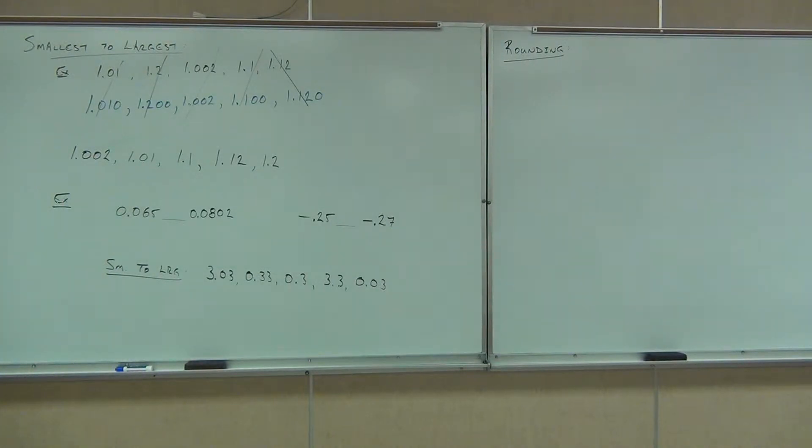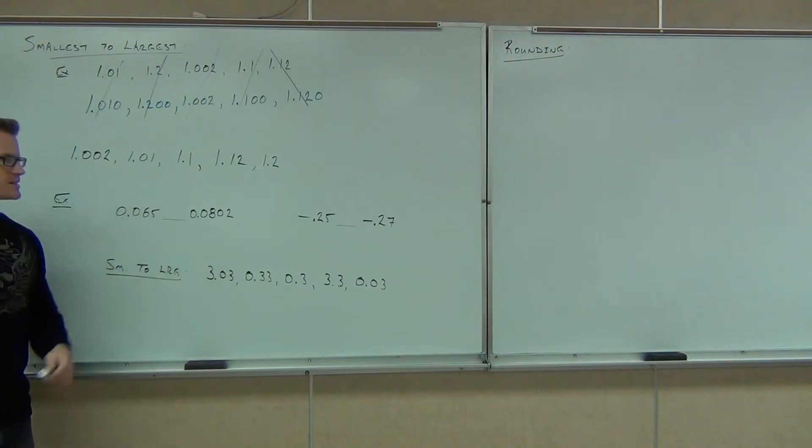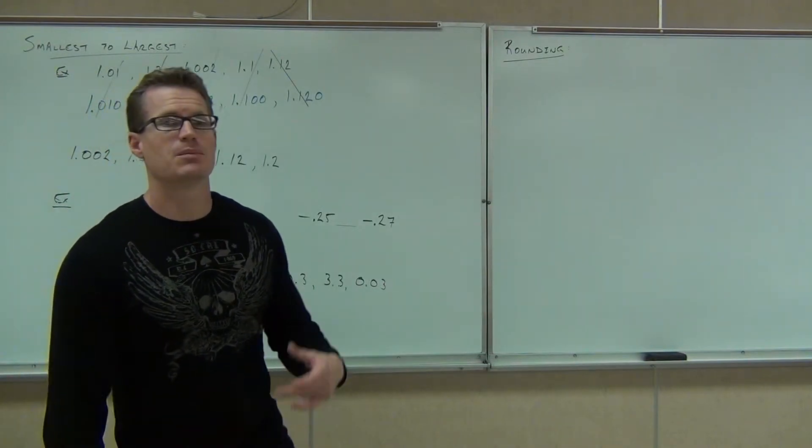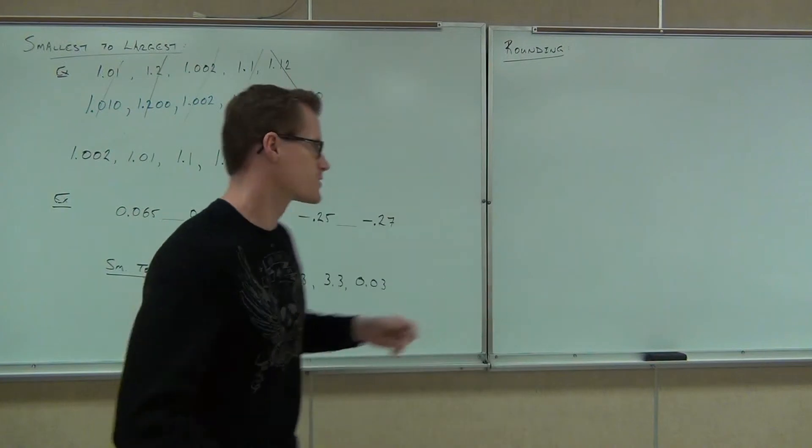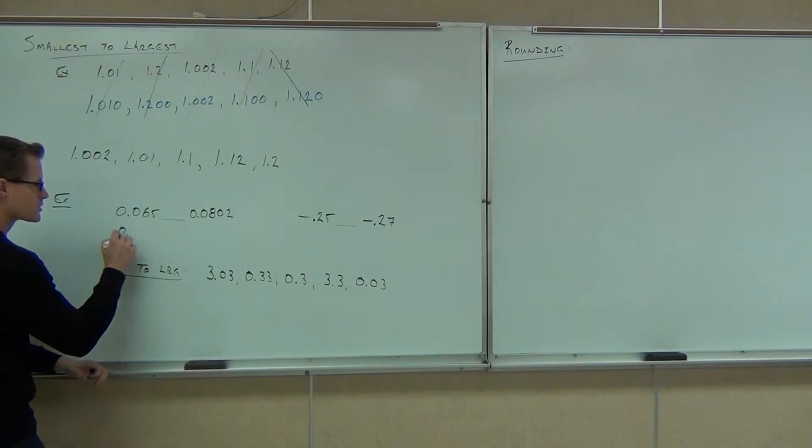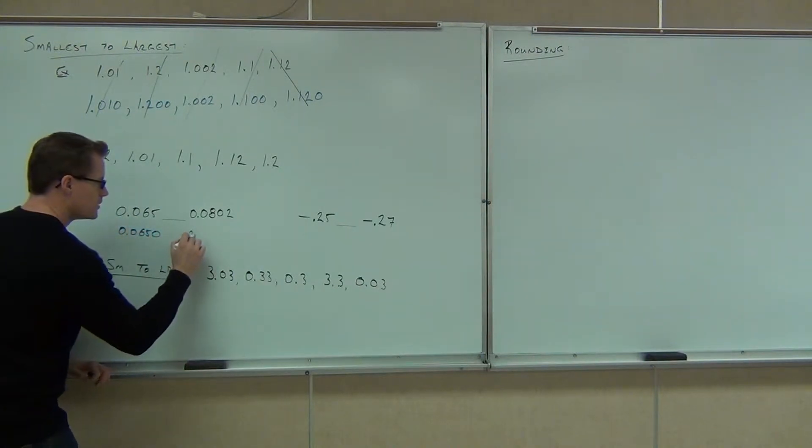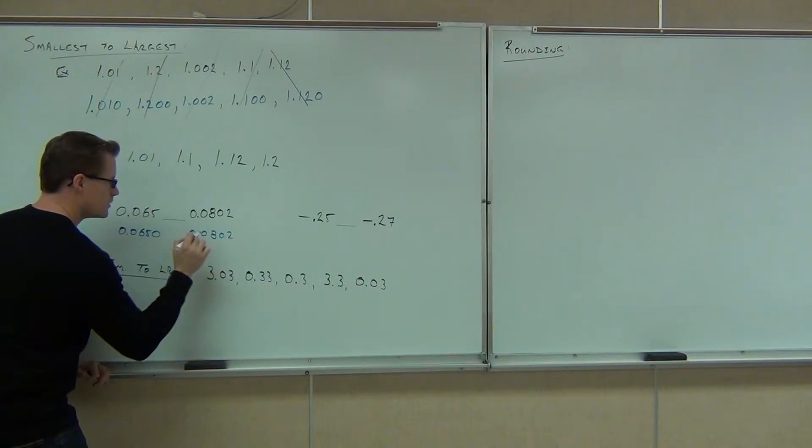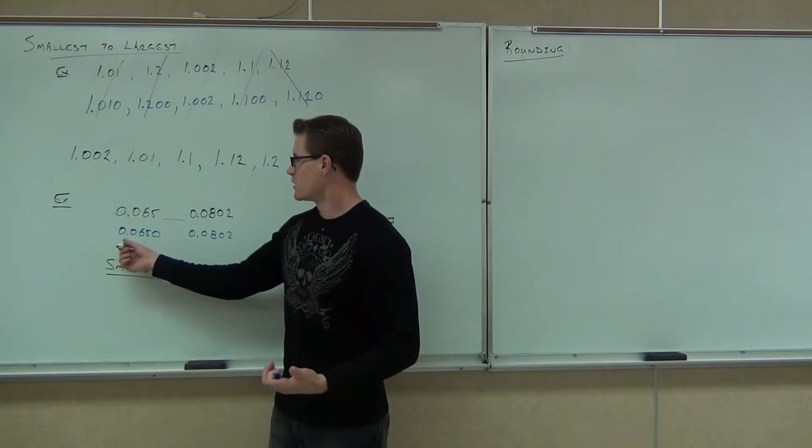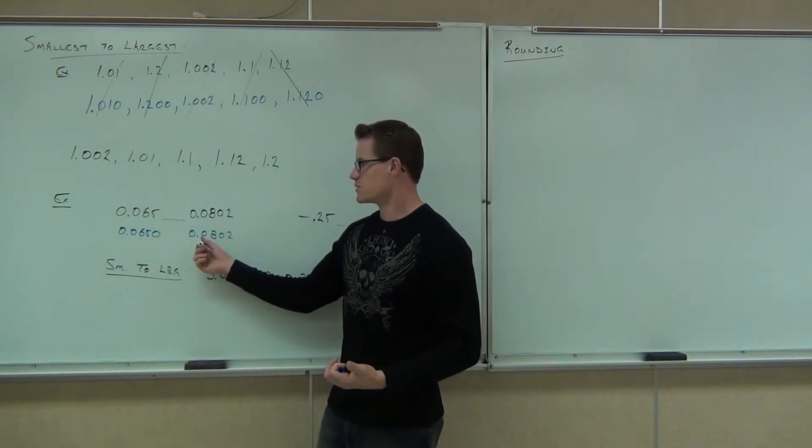So which ones are bigger? Let's take a look. If we're going to do the 0.065 and the 0.802, one way we might figure out which one is the larger of the two numbers is to make them the same length by tacking on some zeros after the decimal place. This has only three numbers behind our decimal place, this one's got four. So if I add on a 0, 0.0650, 0.0802, this makes it easier to compare. Which one is bigger, 0.0650 or 0.0802?